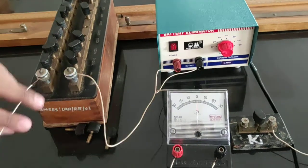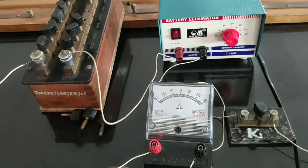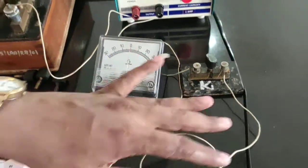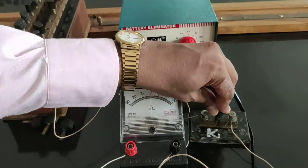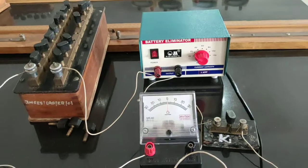Galvanometer is connected to the battery through this key K1. So there is only one key - you can check it out. In this whole circuit, there is only one key.